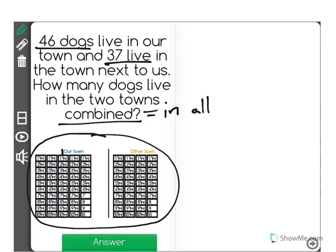So our town here has 46 and the other town next to us has 37. A good way to add using this graphic is to know that each of these bars has 10 dogs in it.